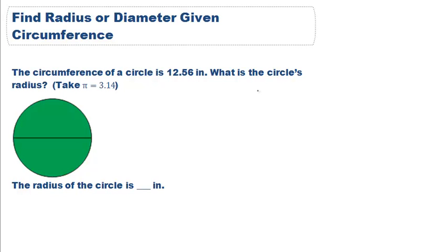We can also work backwards and use the circumference to find the radius or diameter. This circle has a circumference of 12.56 inches and asks us to find the radius.